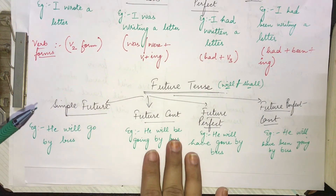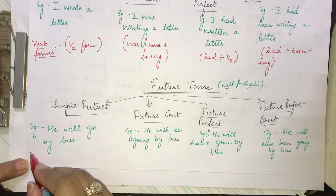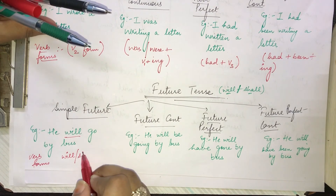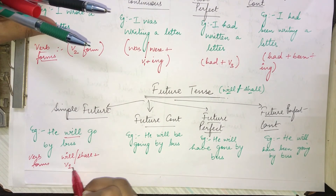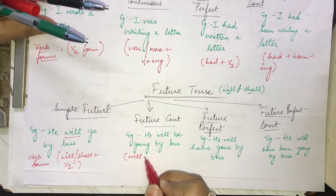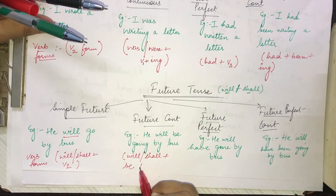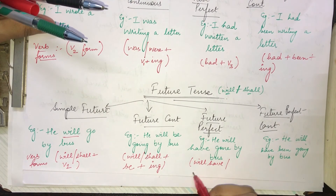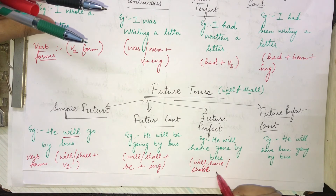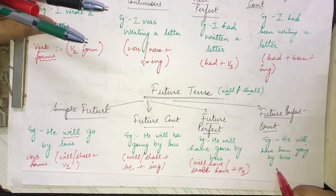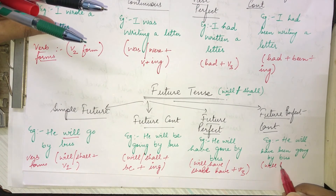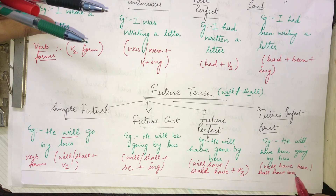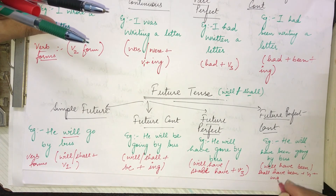Let us look at the verb forms for future tense. Simple future uses: will/shall + V1 form. Future continuous uses: will/shall + be + V1 + ing. Future perfect uses: will have / shall have + V3 form. And future perfect continuous uses: will have been / shall have been + V1 + ing.